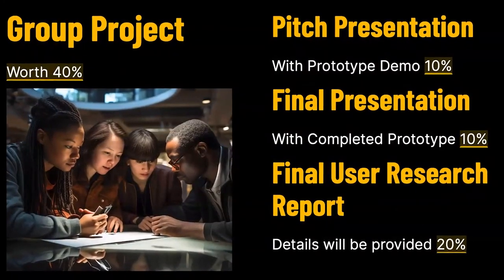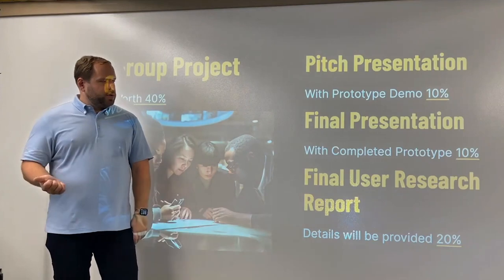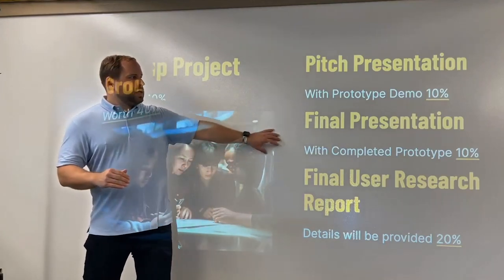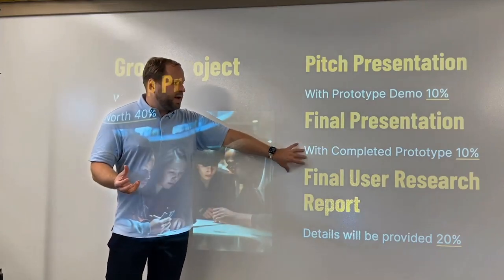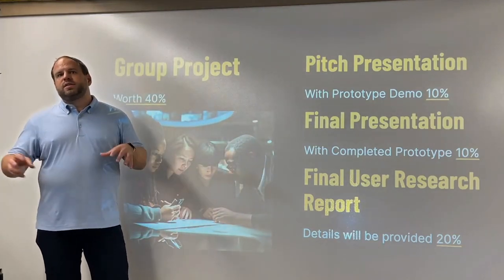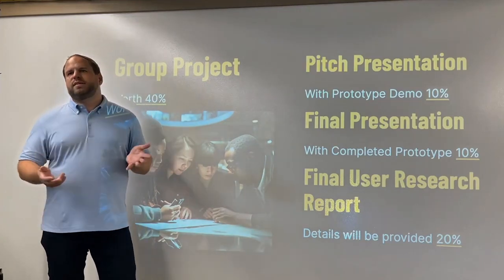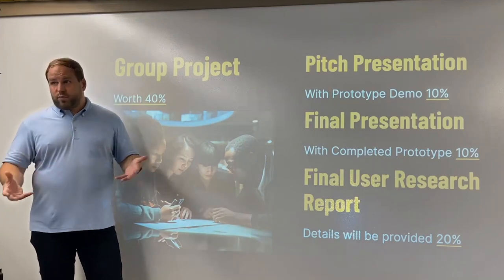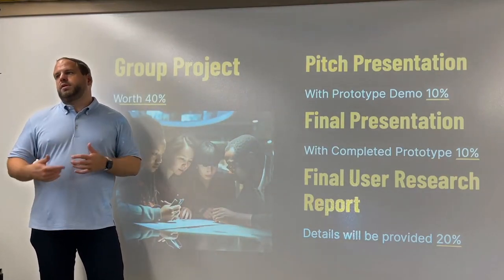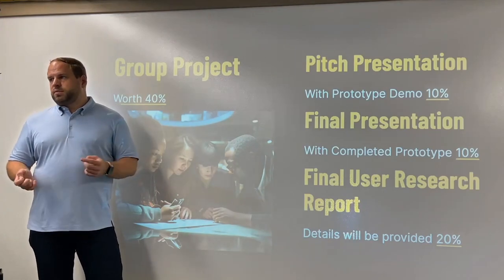The group project is worth 40% — the biggest part of your overall grade. It's broken down into a pitch presentation with a prototype demo worth 10%, happening somewhere in the middle of the semester. Then we have a final presentation with a completed prototype at the very end, also worth 10%. And then we have a final user research report — really reflecting on the design you've done for the prototype as you go through the UX design journey. I'll give you a template for this report; you follow the template and submit. That's the last 20%.